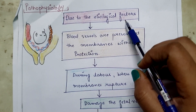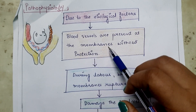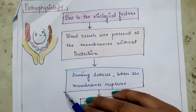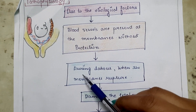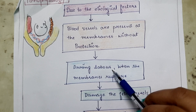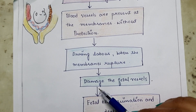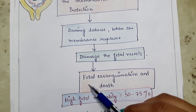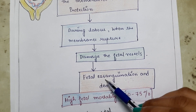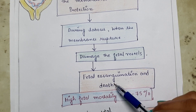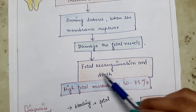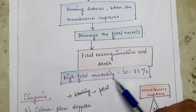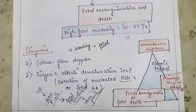Next is the pathophysiology. Due to various risk factors, blood vessels are present at the membranes without protection — without Wharton's jelly — which normally protects them from rupture. During labor, when the membranes rupture, this causes damage to the fetal vessels. When fetal vessels are damaged or ruptured, it leads to fetal exsanguination — a severe loss of blood that may also cause death. In Vasa Previa, there is a high fetal mortality rate of 50 to 70 percent.